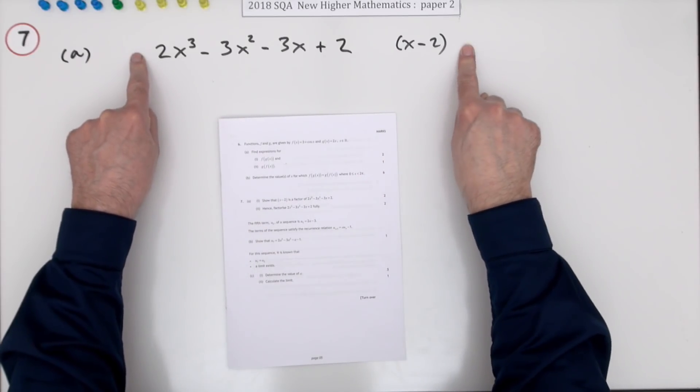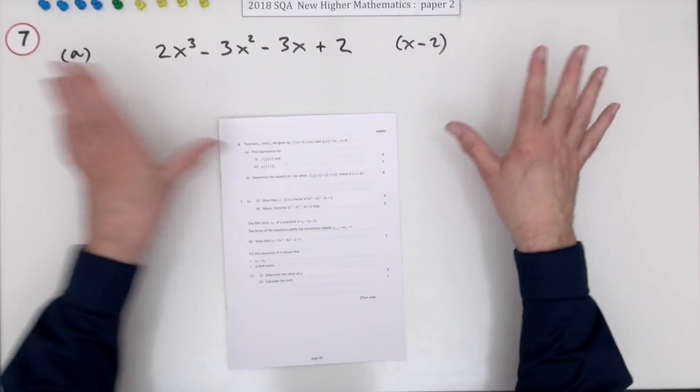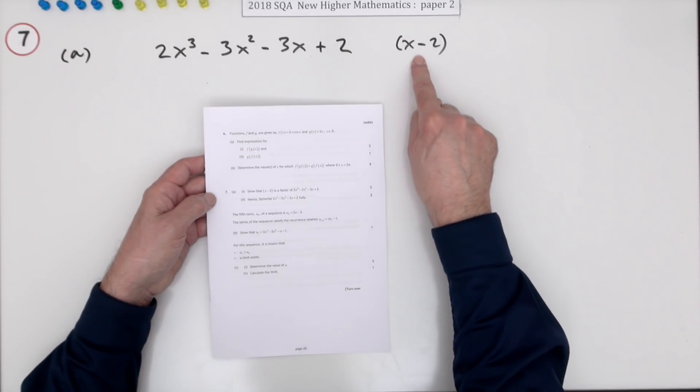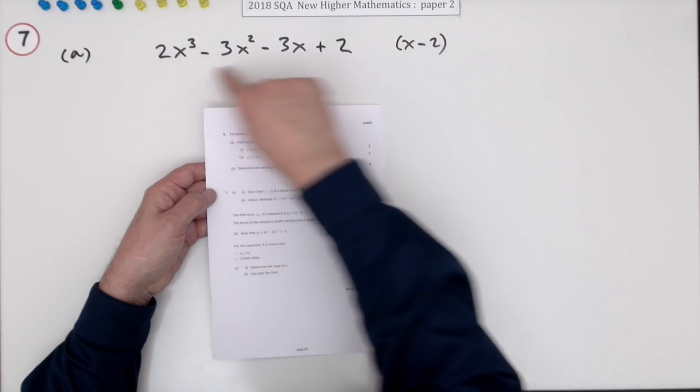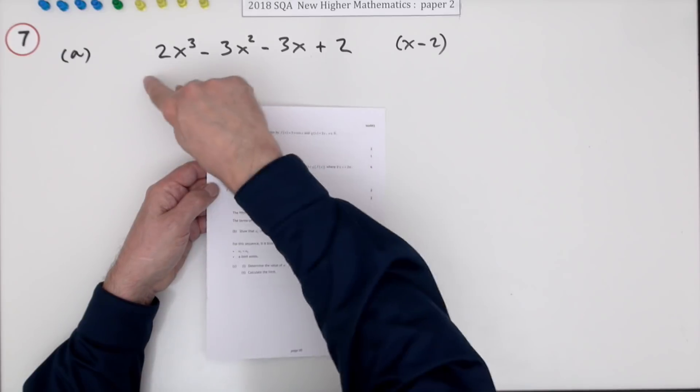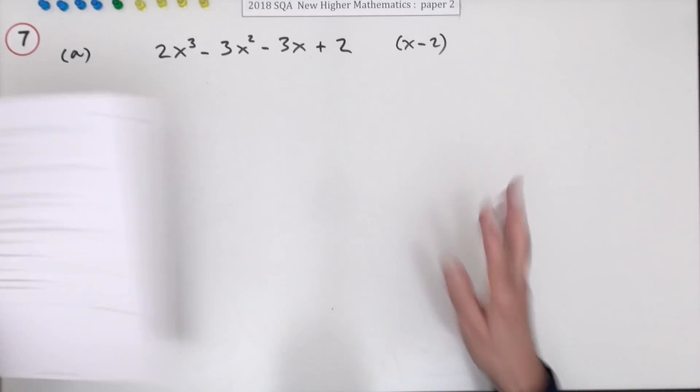It means that you recognize the first bit. As soon as you see this you think synthetic division. Indeed what does it say? Show that x minus 2 is a factor of this cubic expression for two marks. Hence factorize this fully. Four marks altogether.